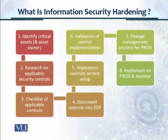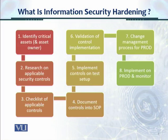For information security hardening, our organization Delta Tech has developed an eight-step process. First, we identify critical assets, all IT assets, and the asset owner. Then we research applicable security controls, which could come from DISA or the Center for Internet Security or any other benchmark for the particular IT asset.